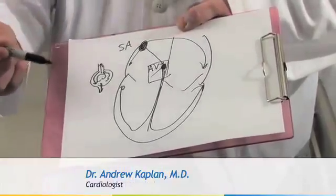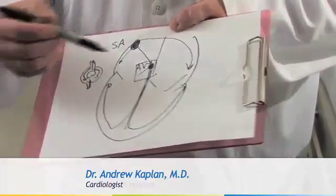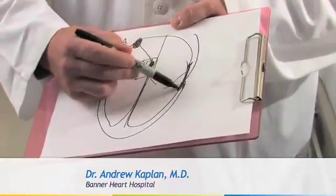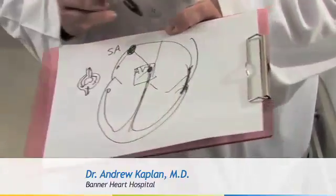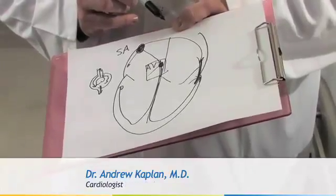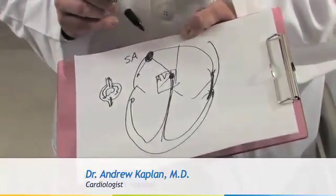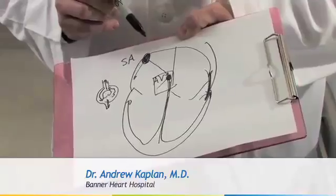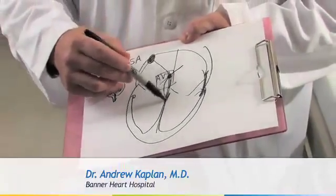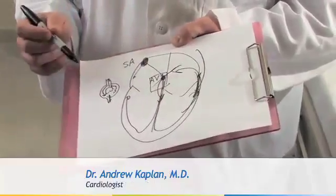Alternatively, there may be an extra electrical connection — a bridge or pathway that we call a bypass track — which is just a little fiber of muscle that connects the upper and lower chambers of the heart in an abnormal place. This allows a different short circuit to occur, in which the impulses go down the AV node or back up the extra pathway.